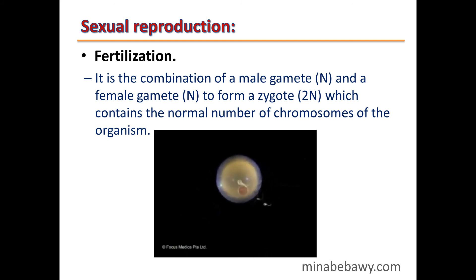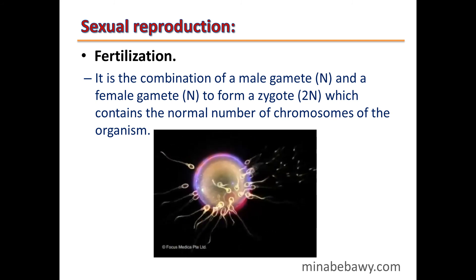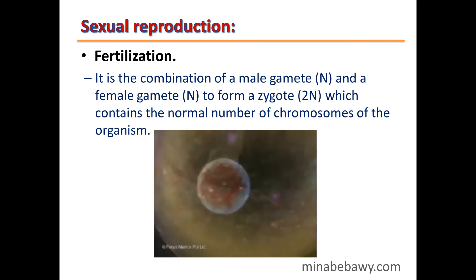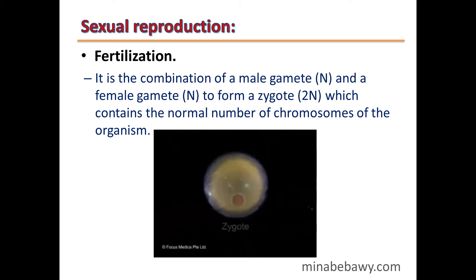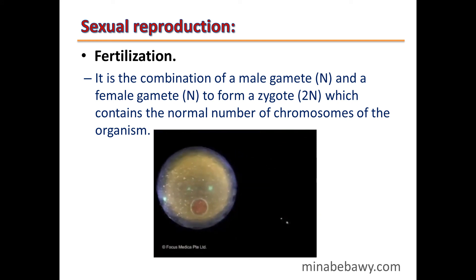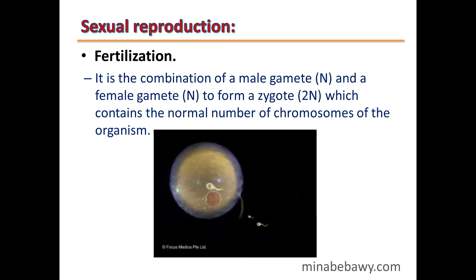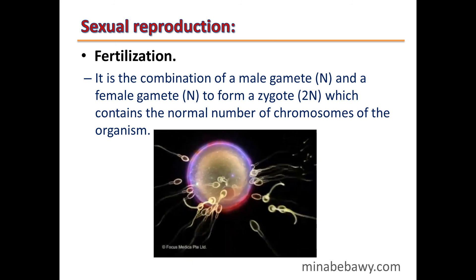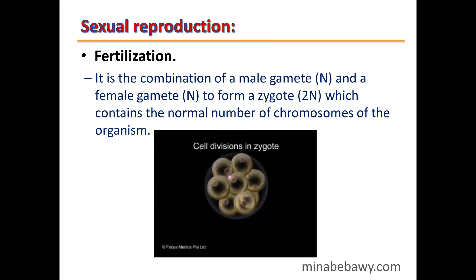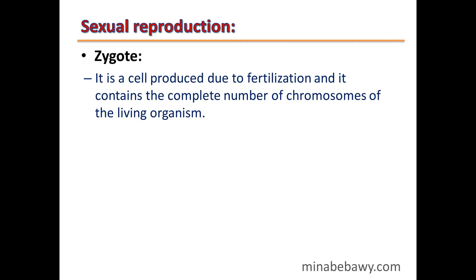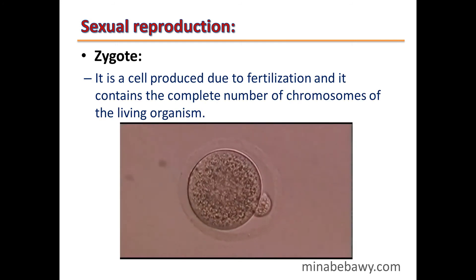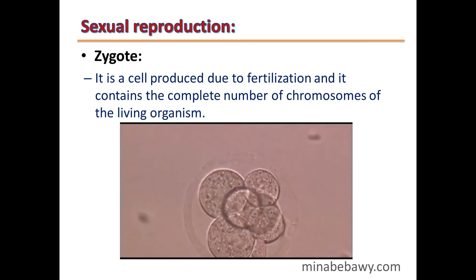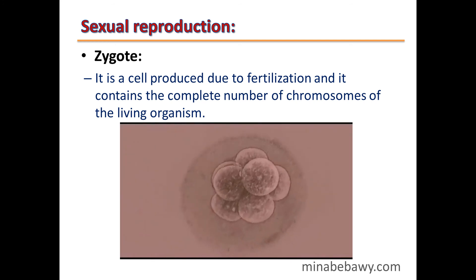Fertilization is the combination of a male gamete (N) and a female gamete (N) to form a zygote (2N), which is a diploid cell containing the normal number of chromosomes of the organism. A zygote is a cell produced by fertilization that contains the complete chromosome number of the living organism.